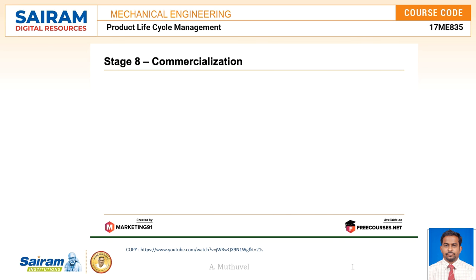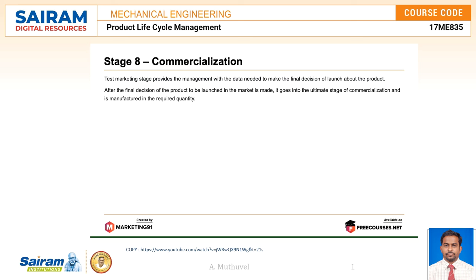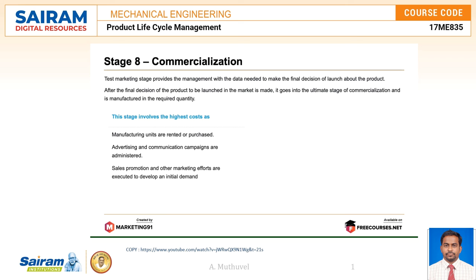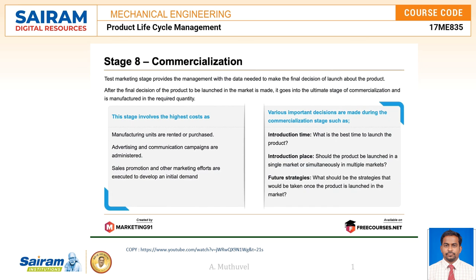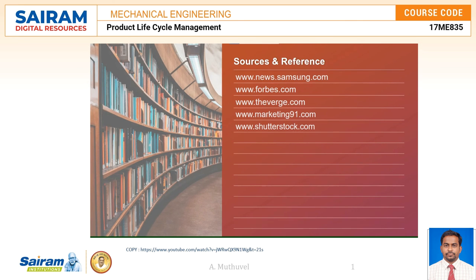Finally, stage eight is commercialization. Test marketing provides management with data needed to make the final decision about launching the product. Once decided, the product is manufactured in the required quantity. This stage involves high costs — manufacturing units are rented or purchased, advertising and communication campaigns are administered, and sales promotions are executed to develop initial demand. Key decisions include introduction time — the best time to launch; introduction place — single market or multiple markets simultaneously; and future strategies post-launch.